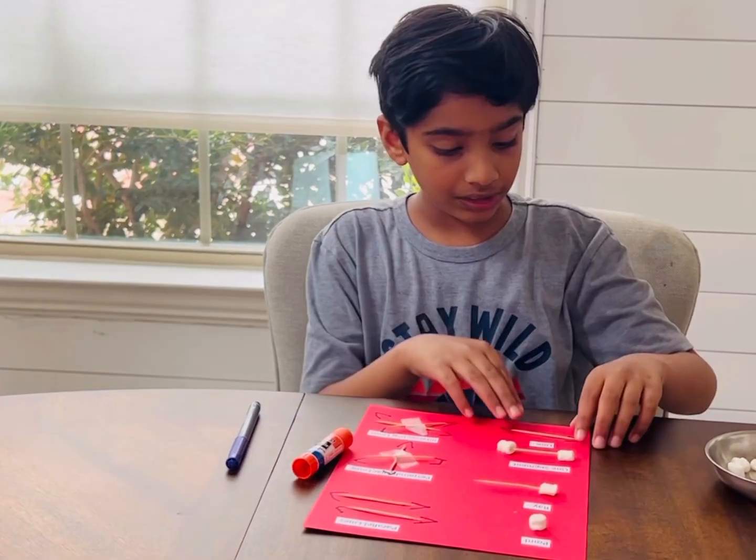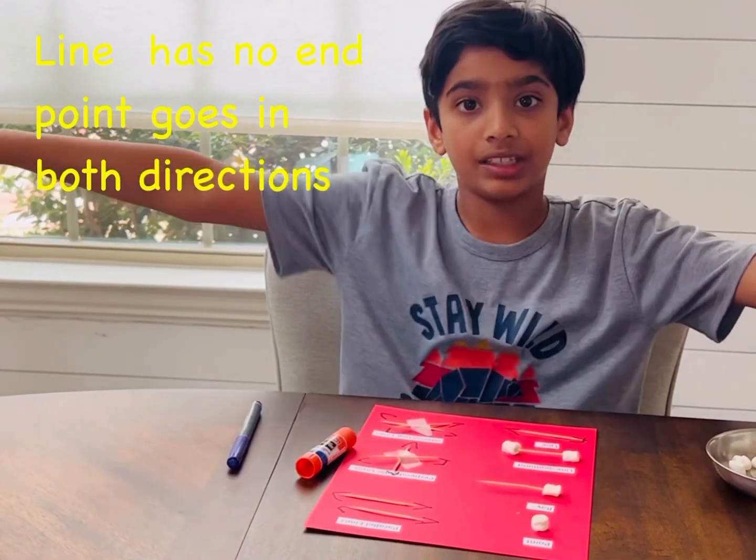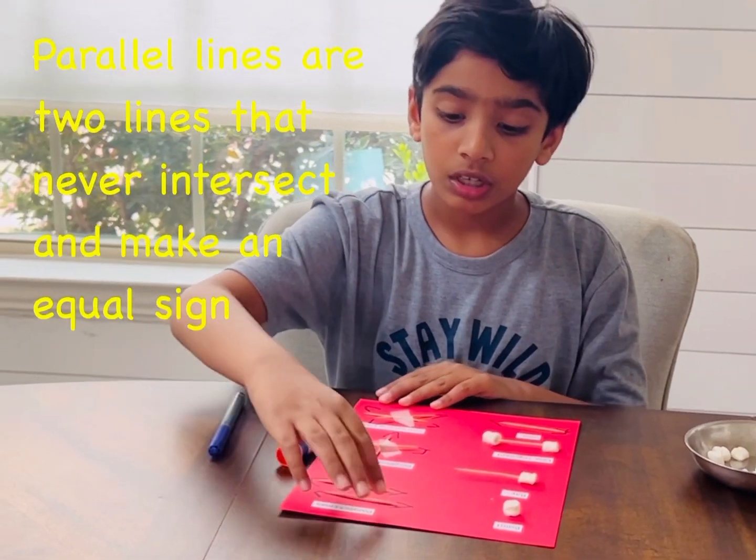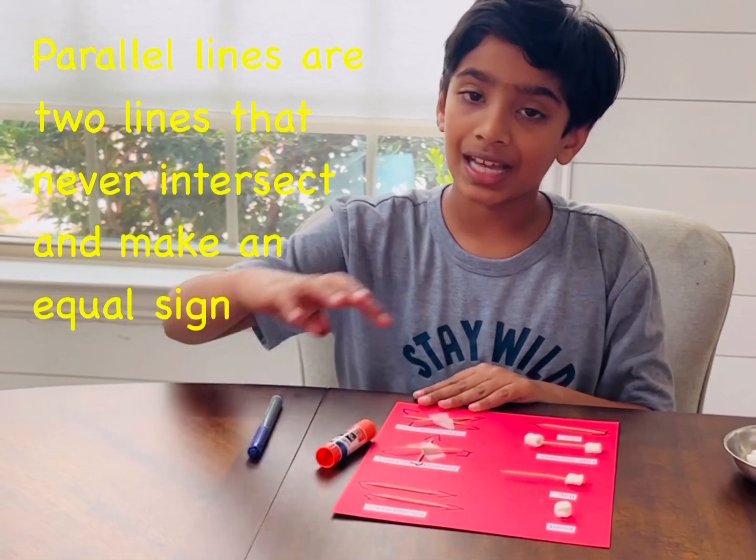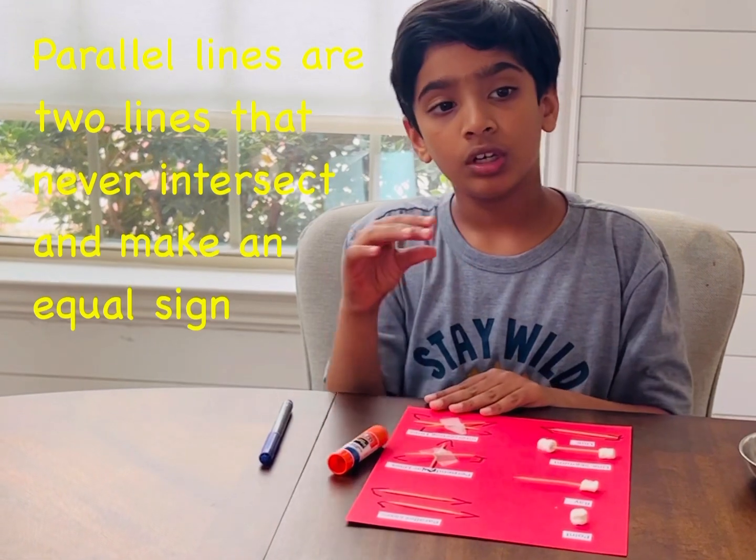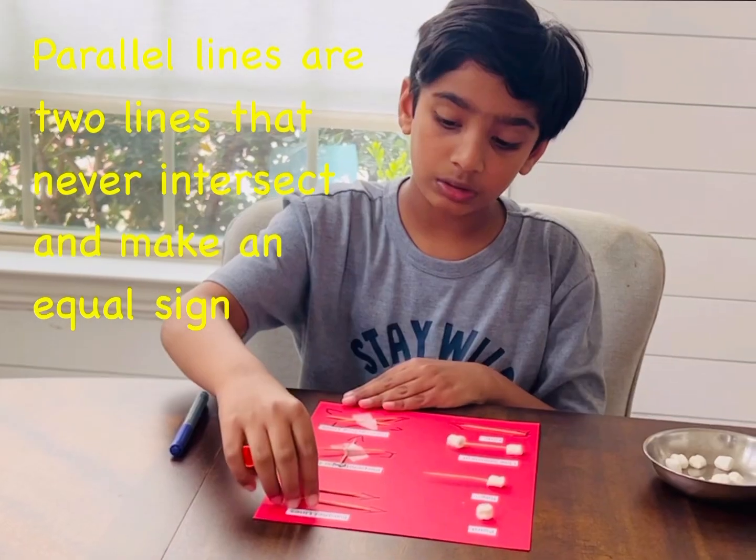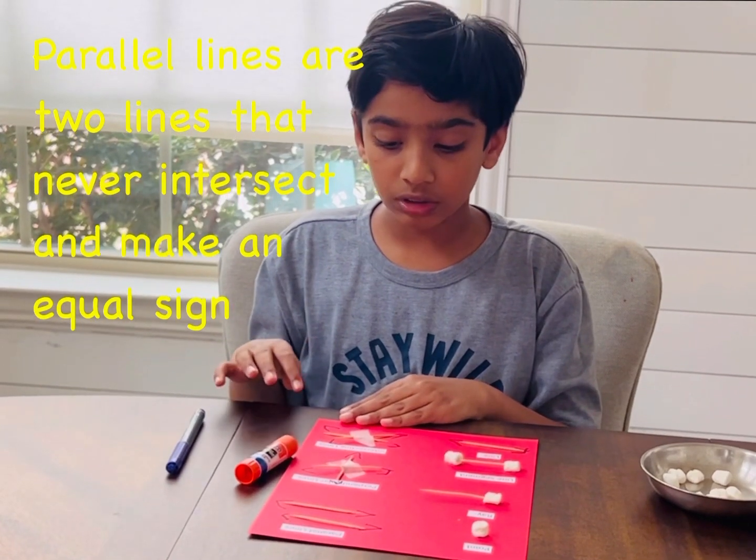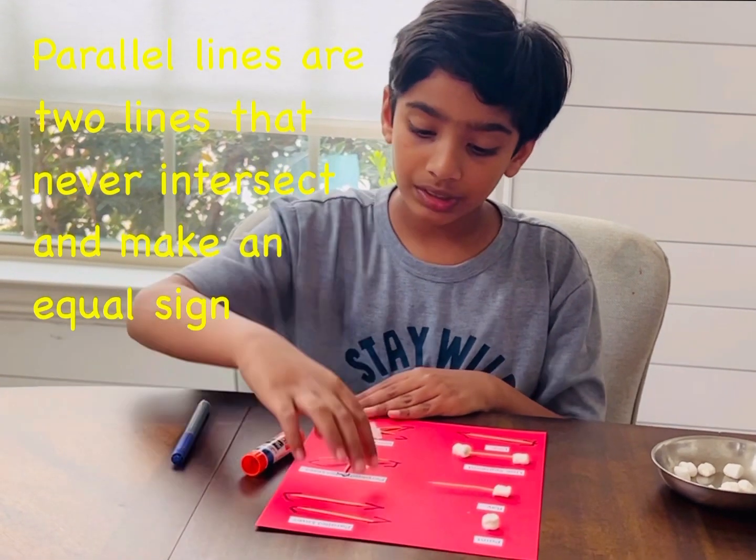A line will be going from this direction and this direction. And parallel lines are two lines that do not touch, and they keep on going. They look like an equal symbol, and they can go in a horizontal or vertical direction. Next,